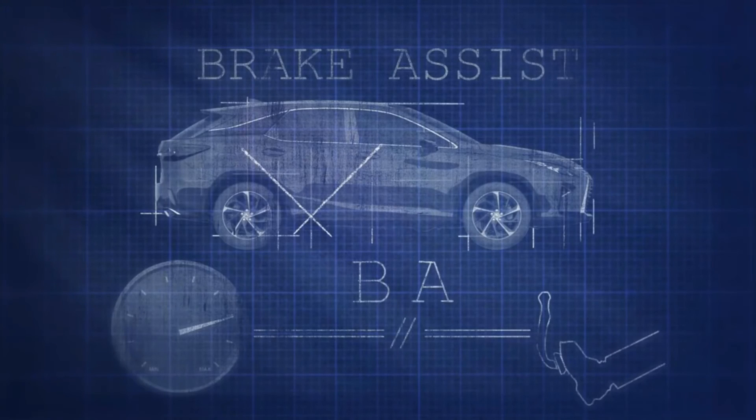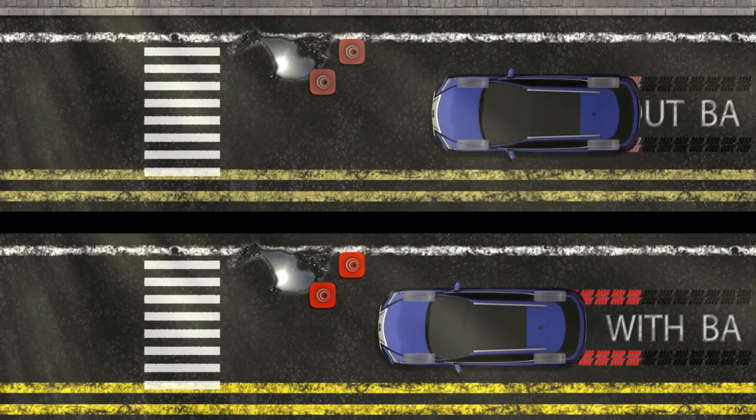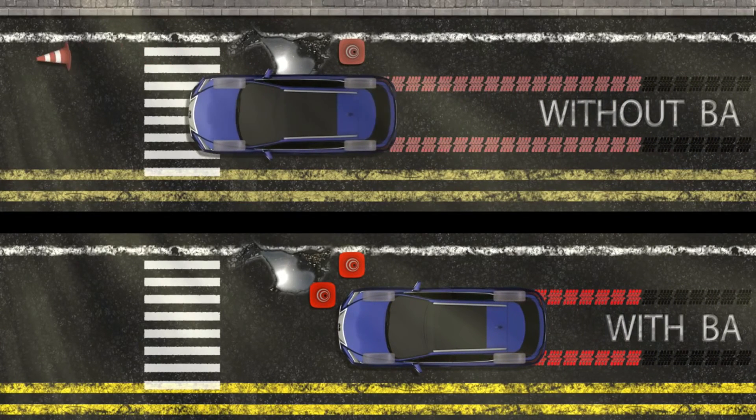When the driver intentionally reduces brake pedal pressure, the system reduces the amount of brake assistance it provides. The additional pressure from BA helps to reduce stopping distances in emergency braking situations.